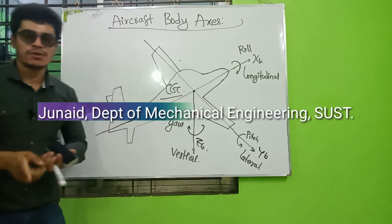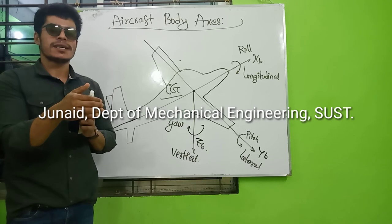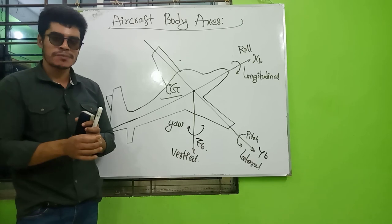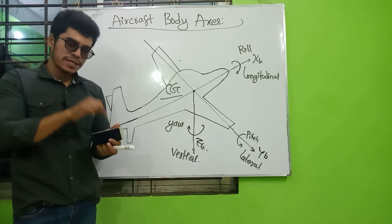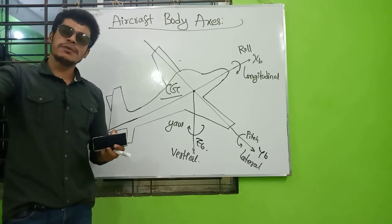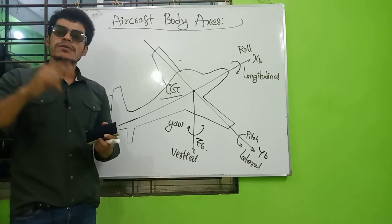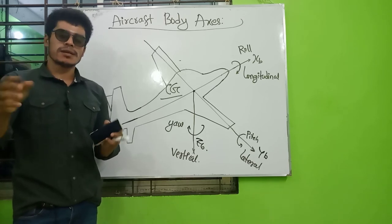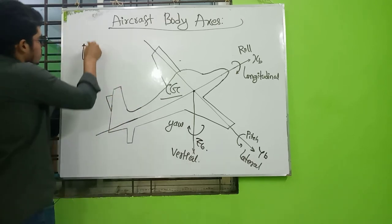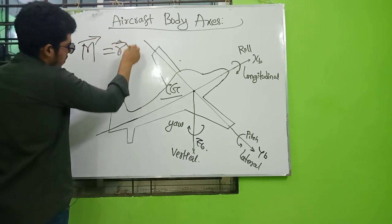The moment is what we have seen. The moment is defined as M vector equals r vector cross F vector. This is the cross product definition of a moment.